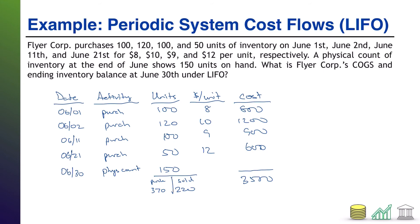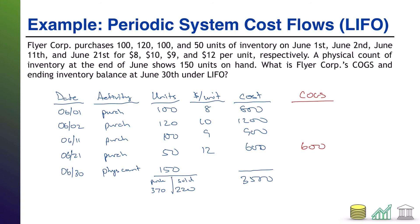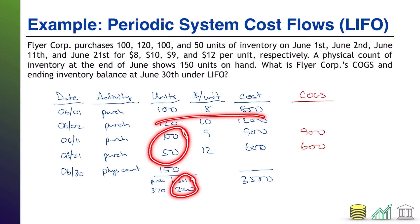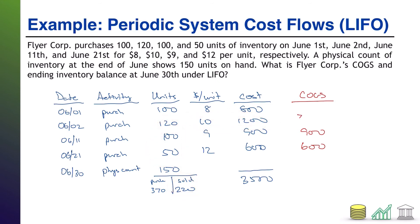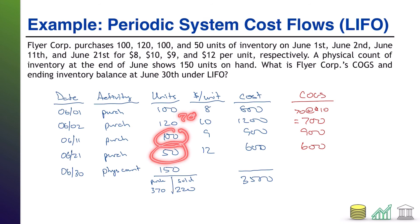Now let's do LIFO. FIFO pulls from the top — oldest purchases sell first. LIFO pulls from the bottom — most recent purchases sell first. We sold 220 units, so under LIFO we pull from the latest units first. COGS: the last batch, 50 units at $12 = $600. The batch before it, 100 units at $9 = $900. That's 150 units combined; we still need to reach 220, so we sell 70 units from the next batch at $10 each = $700. Total cost of goods sold under LIFO: $2,200.